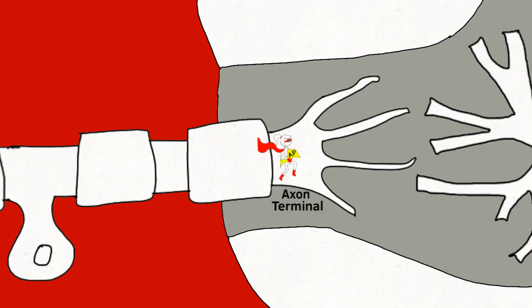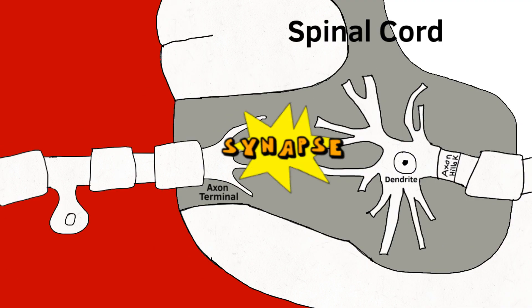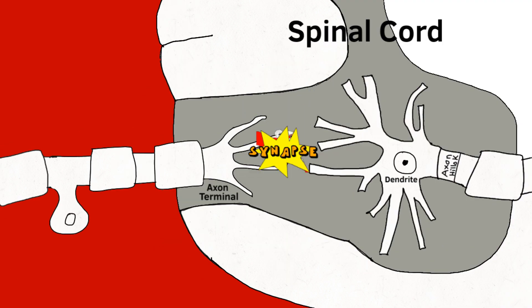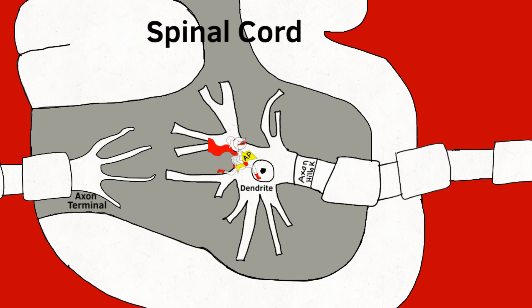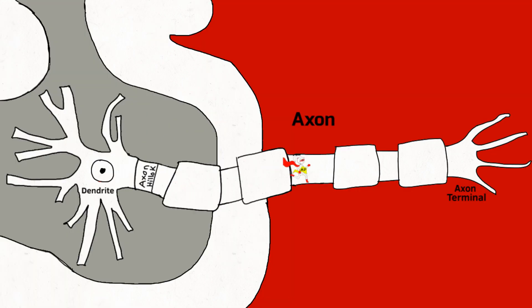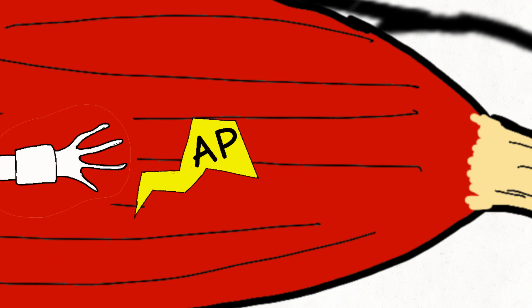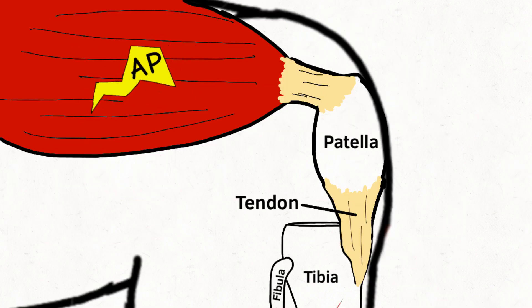Once the action potential reaches the axon terminal, it must jump across the space called the synapse to reach the motor nerve dendrite, where it will continue down the axon to the axon terminal and then to the muscle, which will cause the muscle to contract.